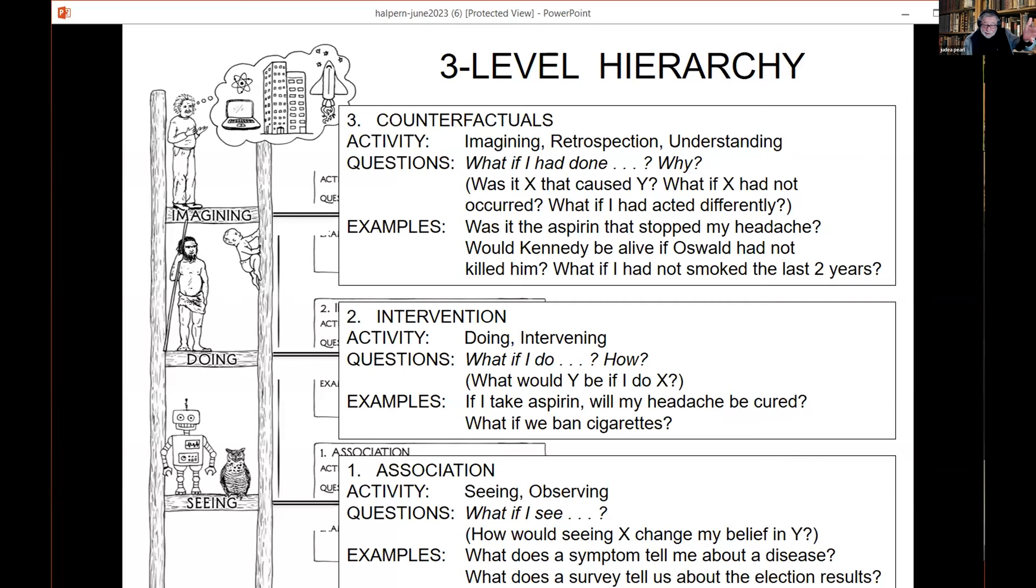Let's start with the ladder of causation. In summary of most of the work, if you formalize the answers to causal questions, you find out that they form a hierarchy in the sense that questions of level I cannot be answered unless you have assumptions in level I or higher.